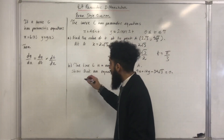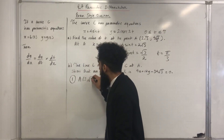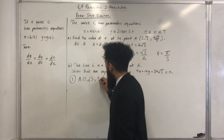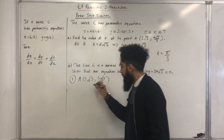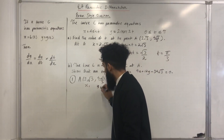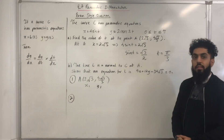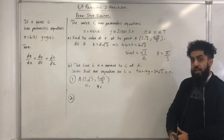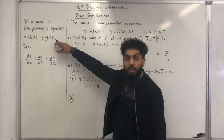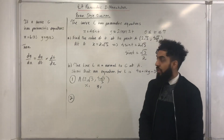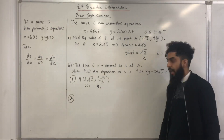My first step is to write down the coordinates for A: 2 square root 3, 4 square root 3 over 3. I'm going to label my coordinates x1, y1. My second step is to find the gradient of the tangent to the curve C at the point A. To find the gradient of the tangent, I need to first find dy over dx. If I have parametric equations, then by the chain rule, dy over dx is dy over dt multiplied by dt over dx.